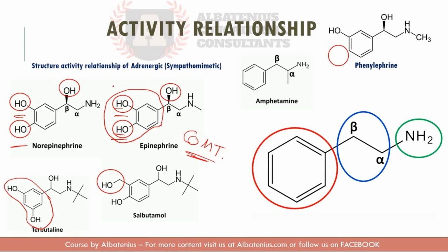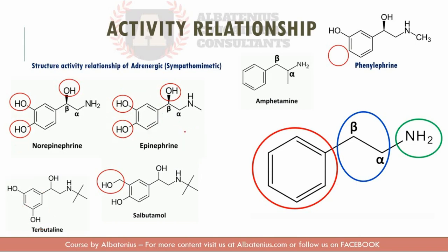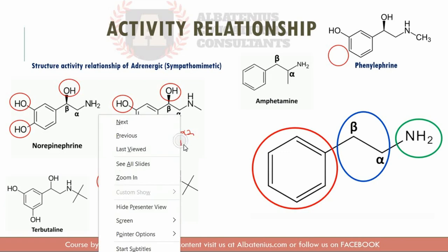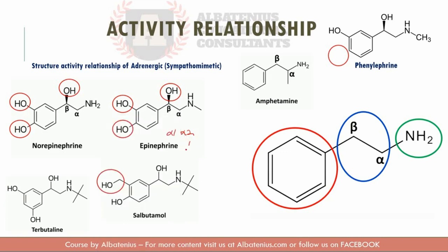Comparing epinephrine and terbutaline: epinephrine is an agonist at alpha-1, alpha-2, beta-1, and beta-2, while terbutaline is a selective beta-2 agonist. What made the difference between those two is the switch from the catechol to the resorcinol.